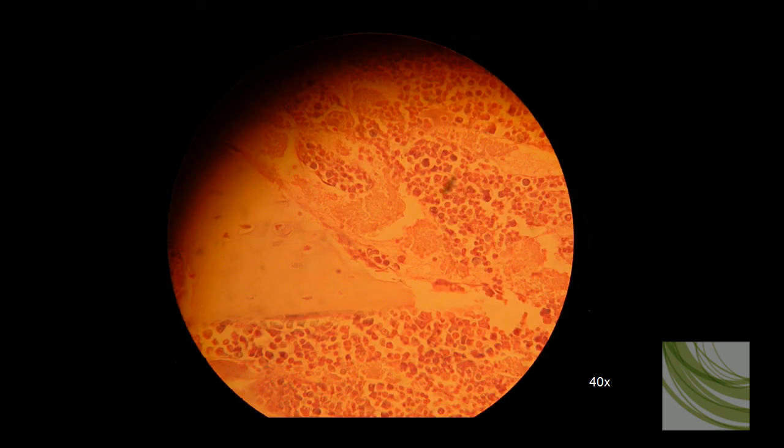Here is the same slide using the 40X objective. And here we can see the cancellous or spongy bone. This area here is all bone marrow. And that should give you a pretty good feel for some of the slides we have here at the school of cancellous or spongy bone.